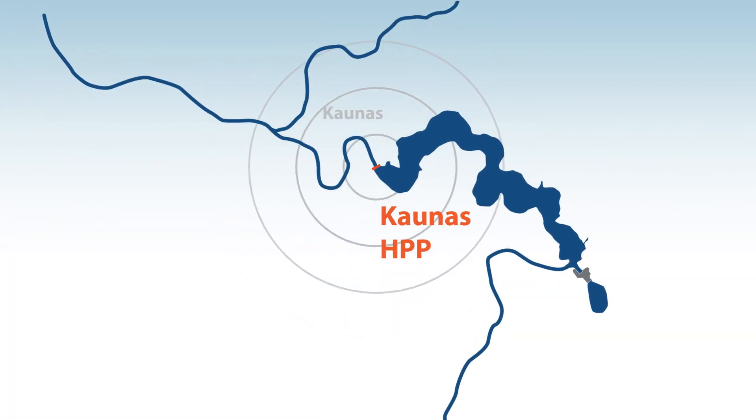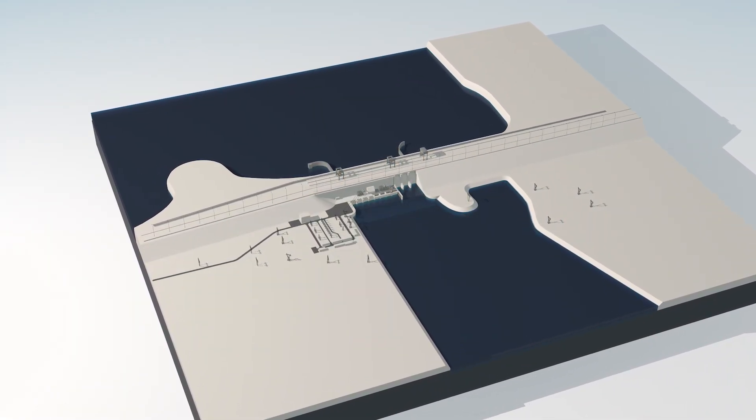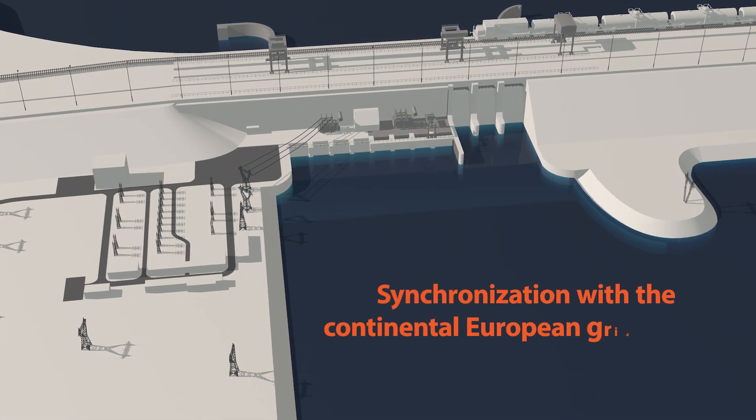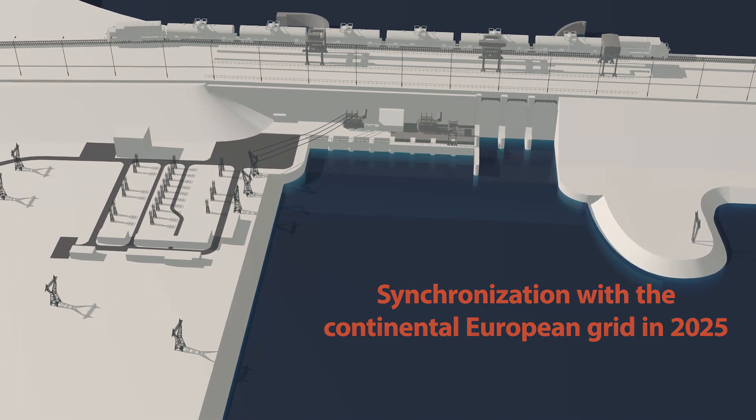We're working on one now at the Konas Algirdis-Brasauskas Hydroelectric Power Plant. This continuously operating power plant could be a great source of frequency containment reserve, or FCR. That service will be needed as of 2025, when Lithuania synchronizes with the continental European grid.